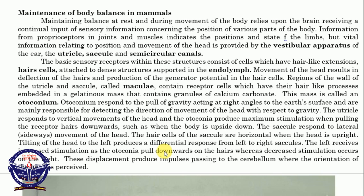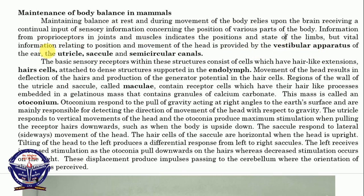Now, maintaining balance at rest and during movement of the body relies upon the brain receiving a continual input of sensory information concerning the position of various parts of the body. Information from proprioceptors in the joints and the muscles indicates the position and the state of the limbs, but vital information relating to the position and movement of the head is provided by the vestibular part of the ear, that consists of the utricle, the saccule, and the semicircular canals.